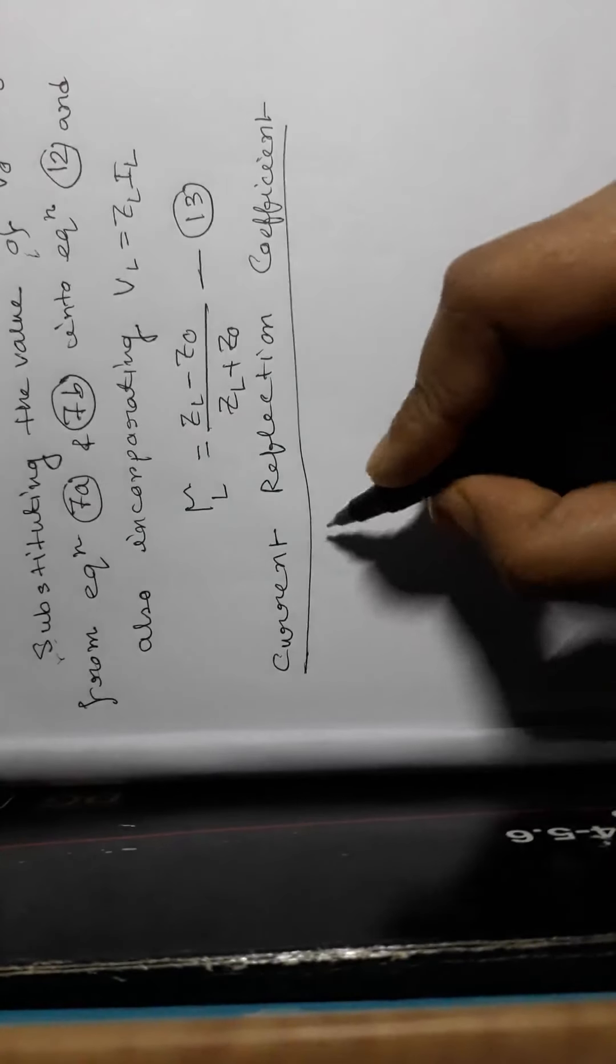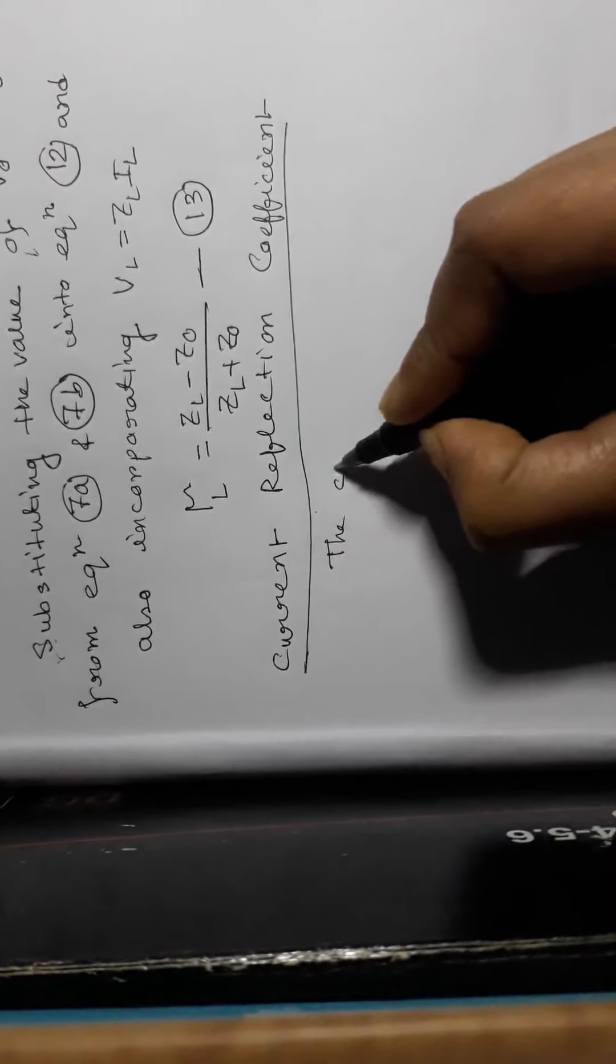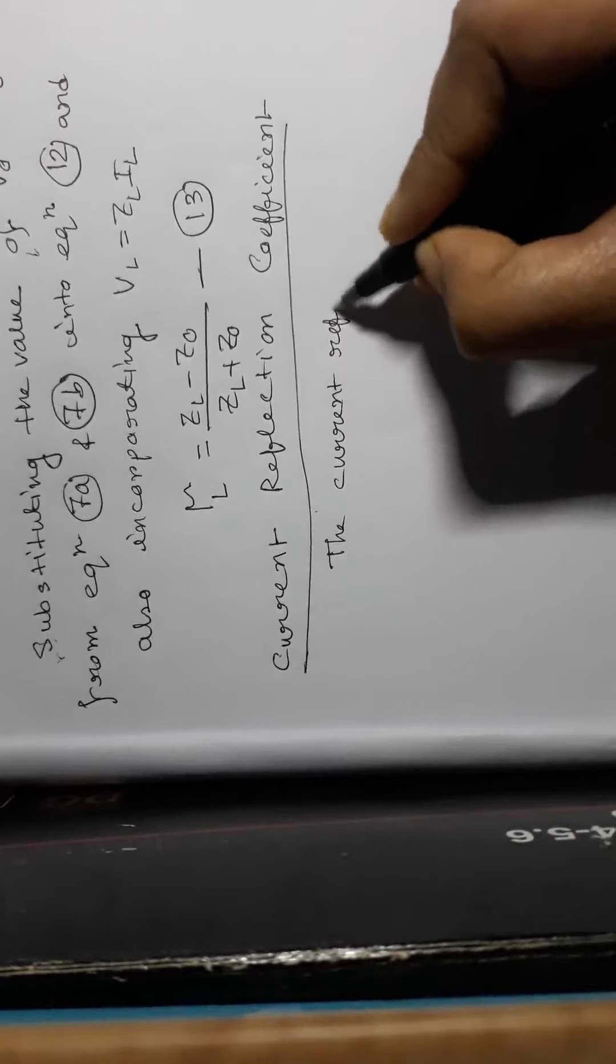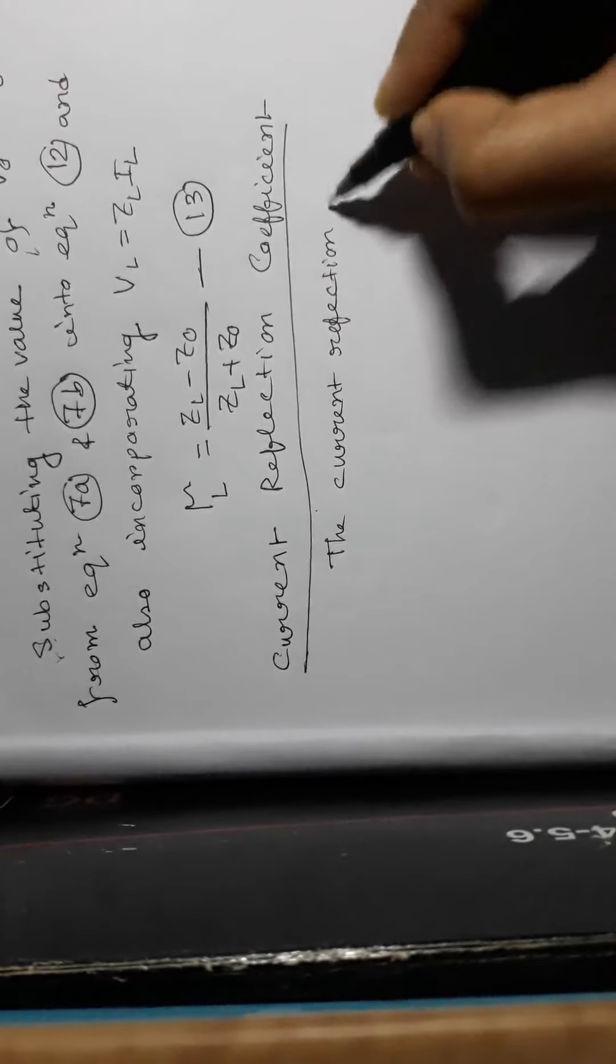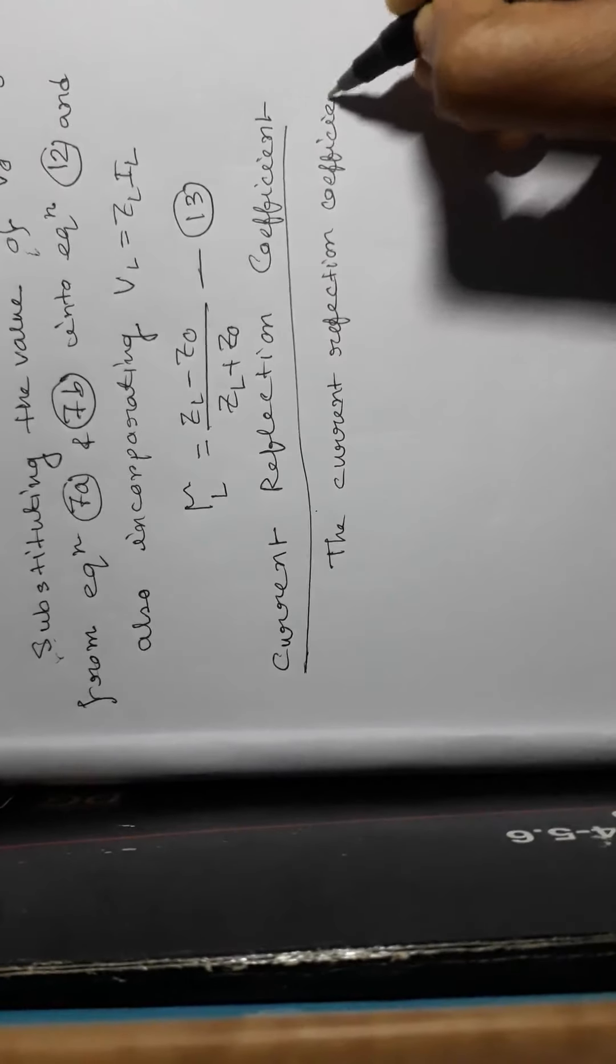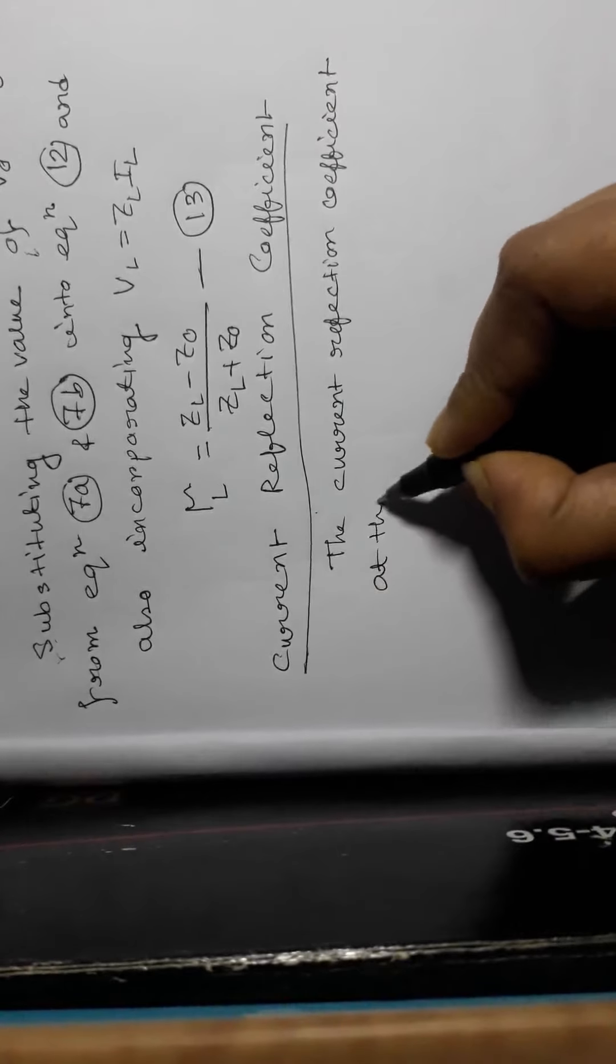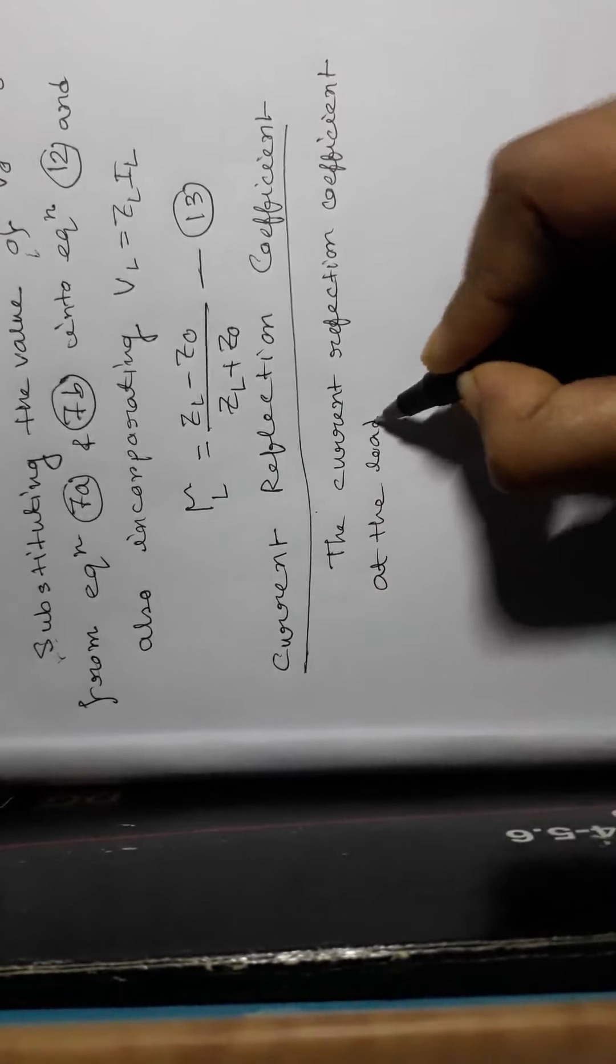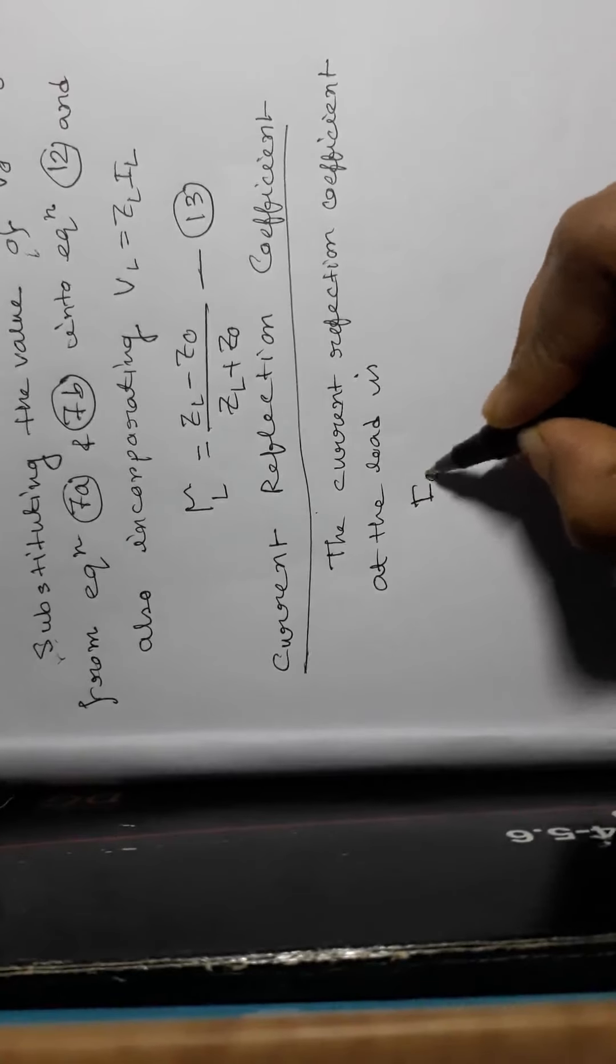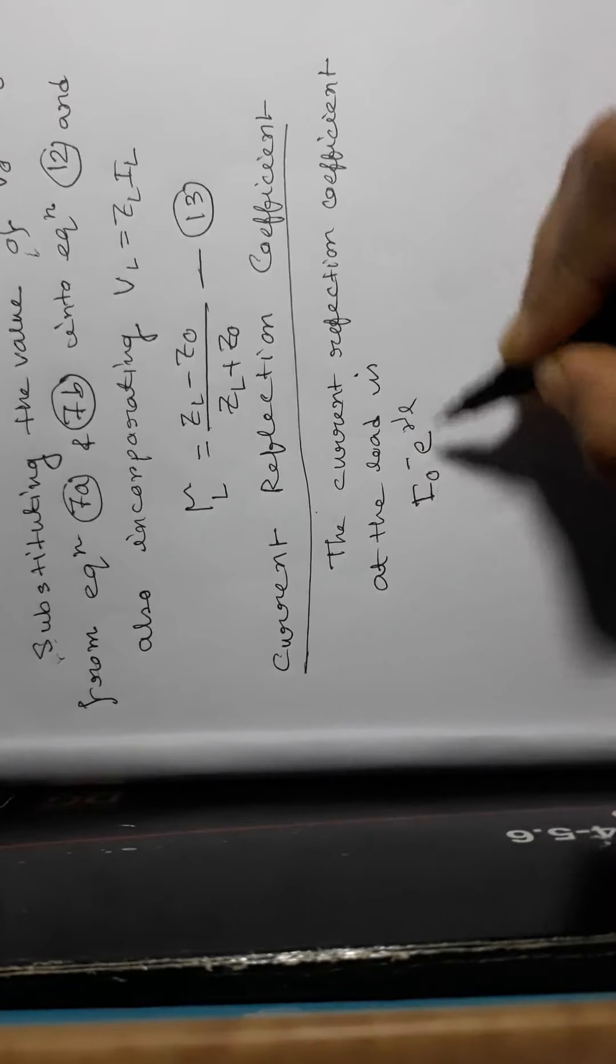How does it come? Now, the current reflection coefficient at the load is I0 minus e to the power gamma L.